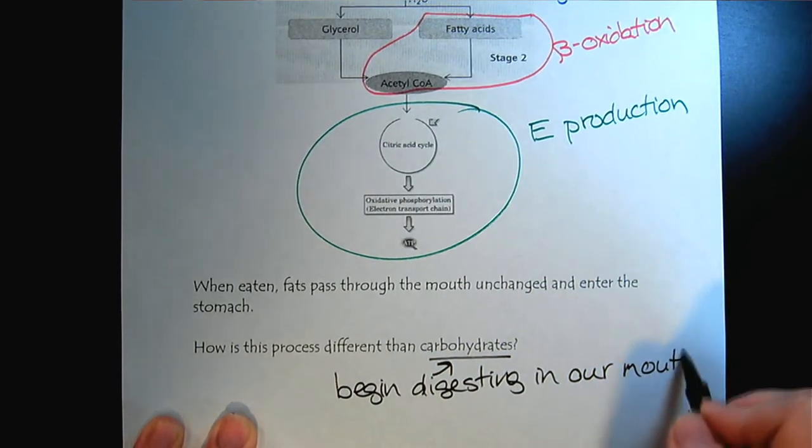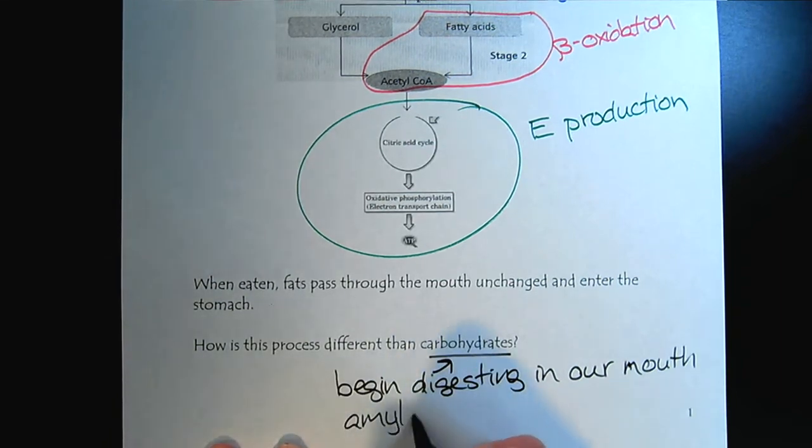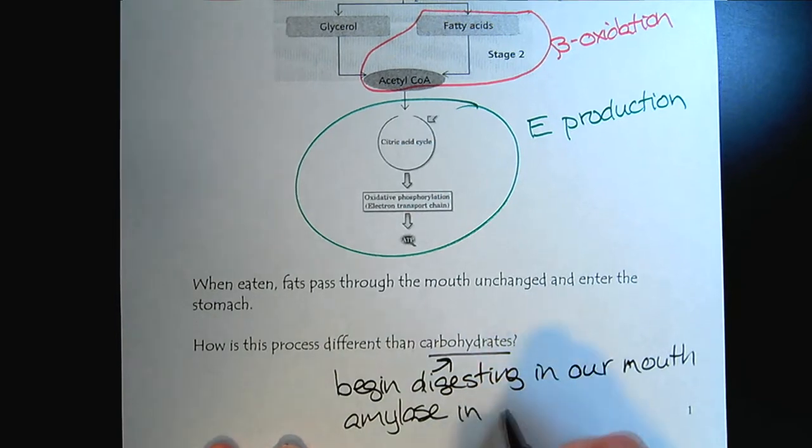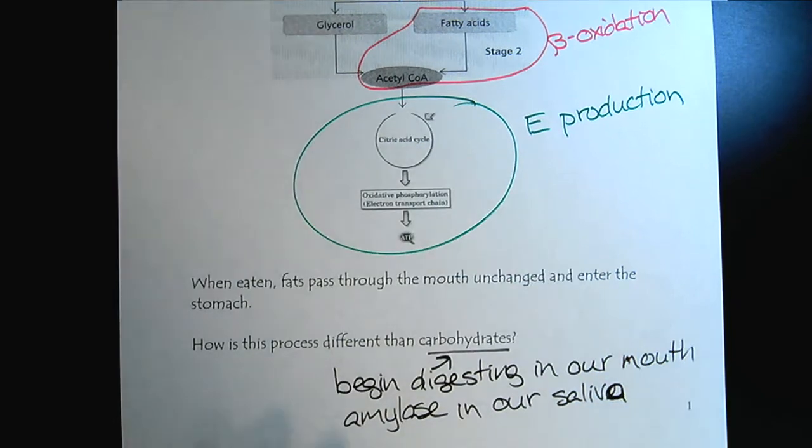So let's compare this to what we've learned about proteins and carbohydrates. How does this process differ than carbohydrates? Remember that carbohydrates, they begin digesting in our mouth. The amylase in our saliva begins the breakdown of carbohydrates while we're chewing. However, fats, there are no special enzymes in our saliva for fats. So they just go straight to the stomach.